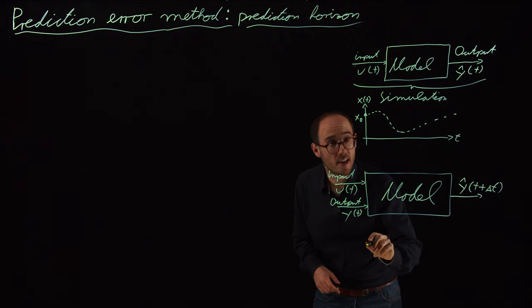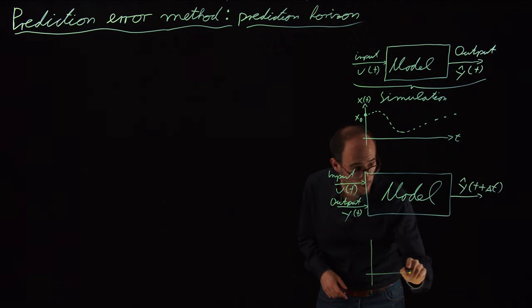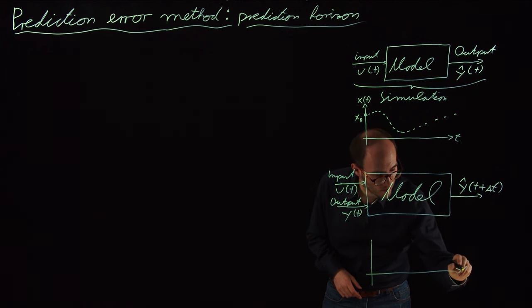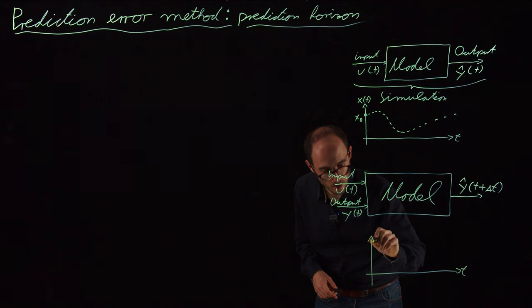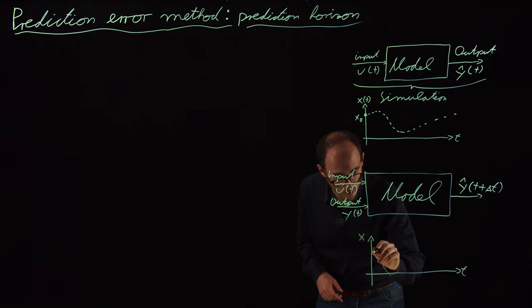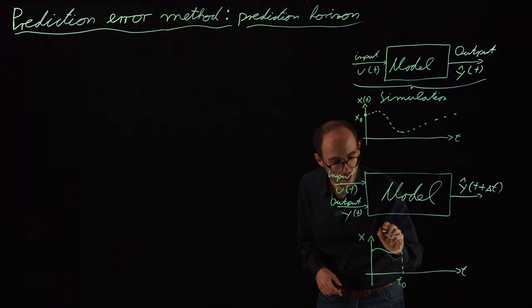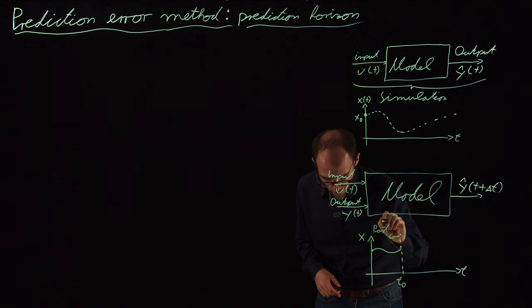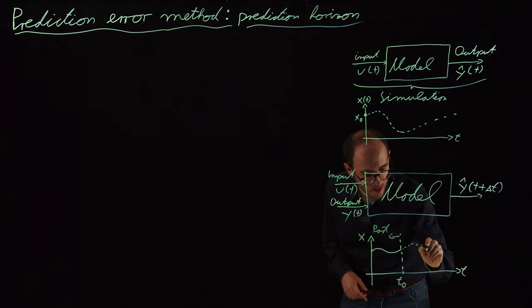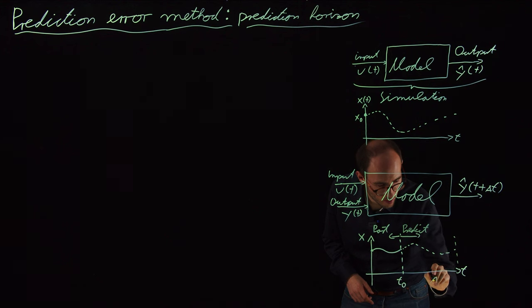If we want to visualize that, that would be something like this. Here is T and let's say that's X or Y, doesn't matter for the moment. Let's say we are here at some T0, so we have access to this past data. Now our task would be to predict the future of this trajectory for a time span delta T.